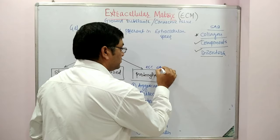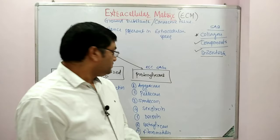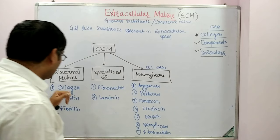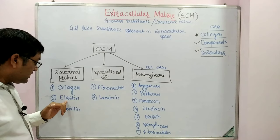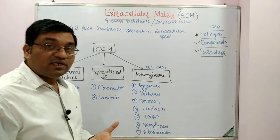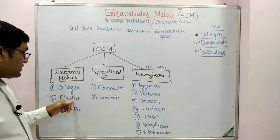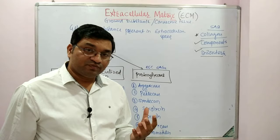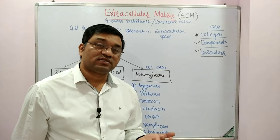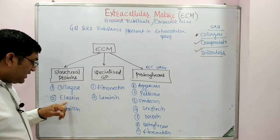The various structural proteins or fibrous proteins are collagen, elastin, and fibrillin. Collagen is the most abundant protein found in animals. Elastin is present in elastic tissues, for example lung — it is responsible for the elasticity of lung, elasticity of blood vessels, and elasticity of tendons.